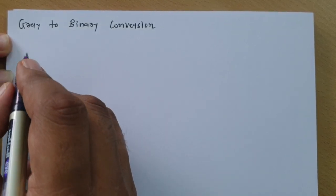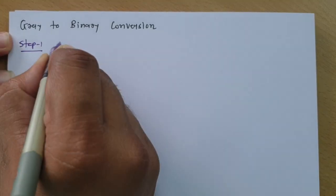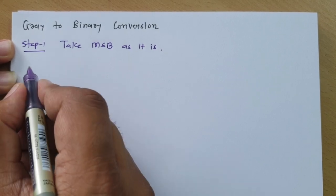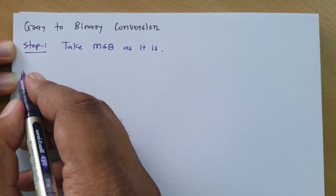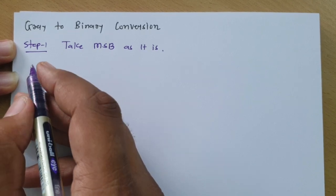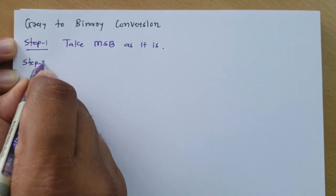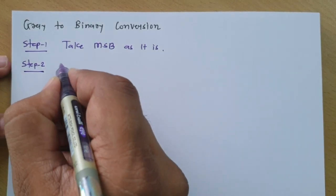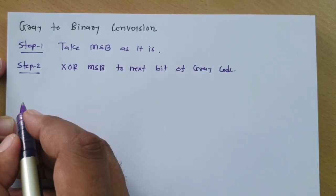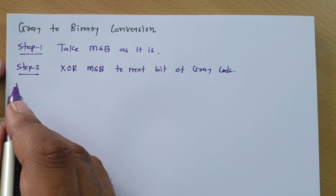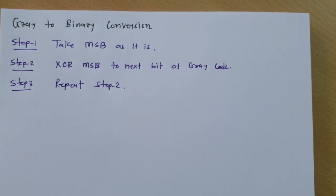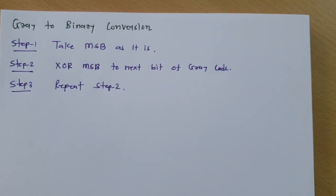The first step is to take the MSB as it is. In the next step, we need to XOR the MSB with the next bit of the gray code. Step three is to repeat step two until we find the full binary conversion. These are the steps we need to follow to translate gray code into binary code.